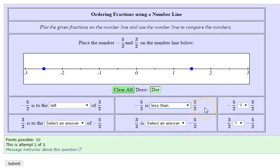So to compare numbers on the number line, if you're to the left of another number, you're less than it. If you're to the right of another number, you're greater than it.